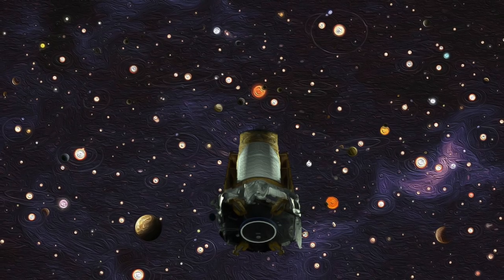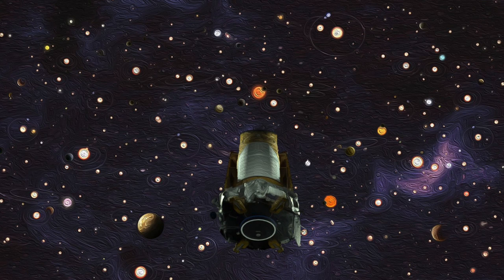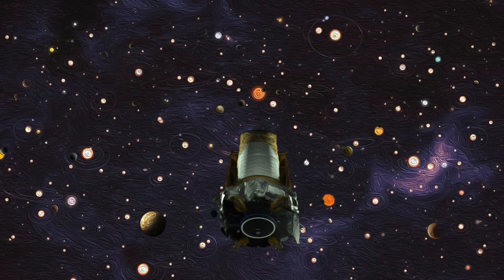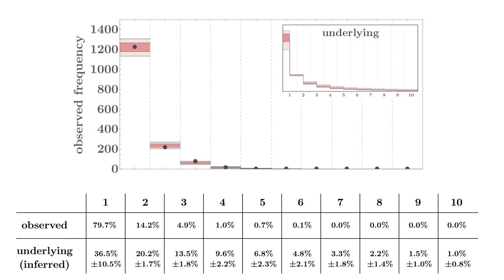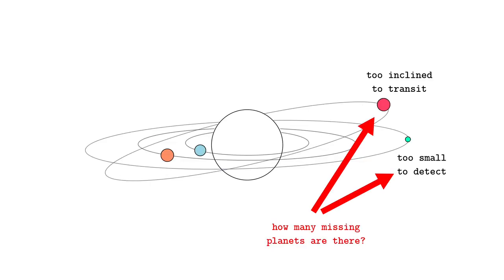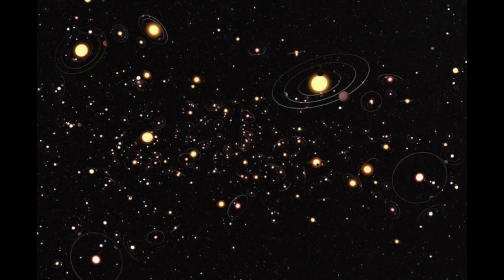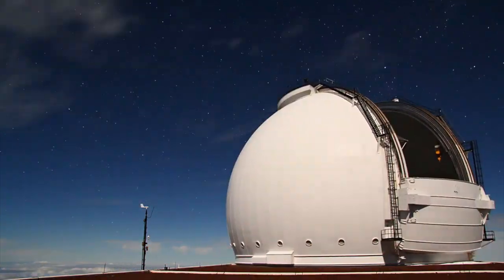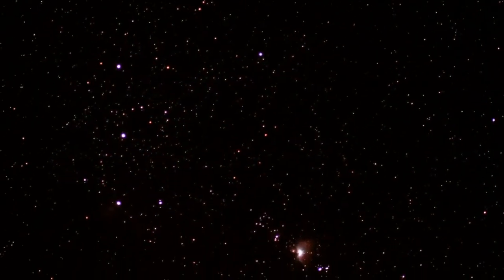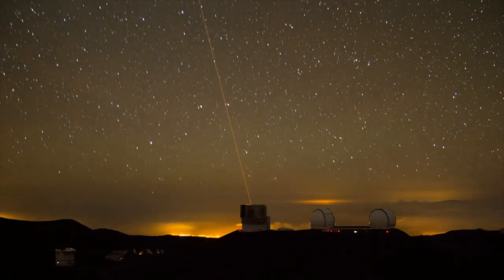Now that we've found the Zipfian distribution matches the observed multiplicities, we can ask what it implies for the unobserved multiplicities — in other words, what's the mismatch between that truth and our observations? How many unseen and undiscovered planets are lurking out there? When we add up all the planets predicted by the Zipfian and subtract the planets already observed, we calculate there might be roughly twice as many planets as we currently see — just hiding in the already known planetary systems. That's great motivation for going back and looking again at the known Kepler systems.